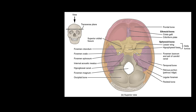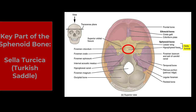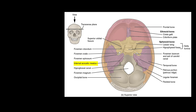Now we're looking down into the skull with the top popped off. You can see the crista galli and cribriform plate of the ethmoid bone well here. The sphenoid bone looks like a bat. The key structure is the sella turcica — meaning Turkish saddle — which is where your pituitary gland sits. The sella turcica is the part of the sphenoid bone that protects the pituitary gland. You can also see the internal auditory meatus (also called the internal auditory canal or internal acoustic meatus) here inside the temporal bone.